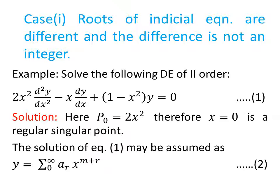Here you can see that p₀ equals 2x². When you put x equal to 0, the value of p₀ becomes 0. It means x equal to 0 is a regular singular point. Therefore, the solution of equation 1 can be assumed as y equal to sigma a_r x to the power m plus r — let this be equation number 2.